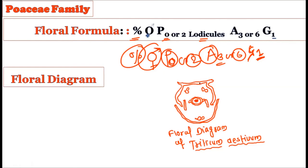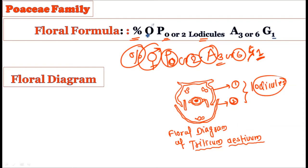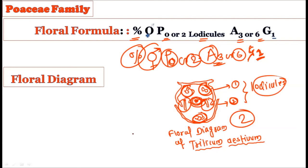The floral diagram for the Poaceae family is very unique. It shows two lodicules (first and second), three androeciums, and one gynoecium in the center. This is quite different from dicotyledonous floral diagrams because Poaceae is a monocotyledonous family and the monocot flower differs significantly from the dicot flower.